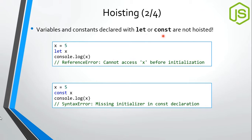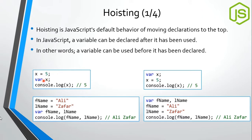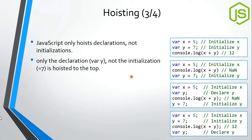In ES6, let and const are not hoisted, unlike var. With var, declarations are moved to the top, so the variable is declared, then initialized, then used. With const, you get a syntax error if you try to use it before declaration. JavaScript hoists declarations but not initializations — if declaration and initialization are separate, only the declaration moves to the top.